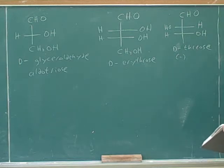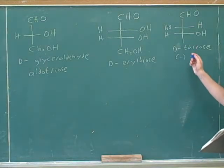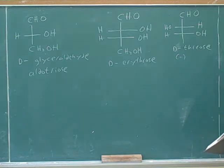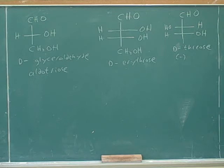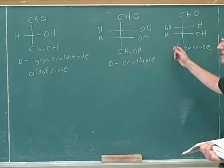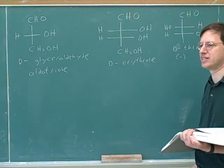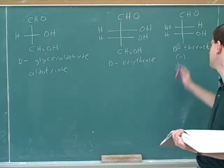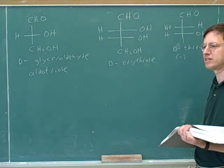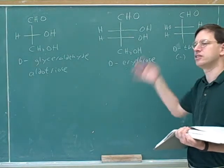Minus means counterclockwise and plus means clockwise. D and L are just conventional notations: D means the bottom stereocenter is pointing to the right, and L means it is pointing to the left. That has nothing to do with how the molecule rotates light. The only way to determine optical rotation is to do the experiment.